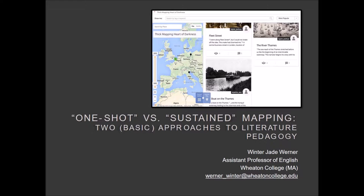Here's how I'm structuring this talk: I'm going to explain the context of these two pedagogical settings. I'm going to turn to my objectives, my lesson plan, and my outcomes for my one-shot mapping experiment, before turning to sustained mapping. And finally, I'm going to end with a climactic slide of my pros, cons, and takeaways from doing this work this past semester and over the summer.